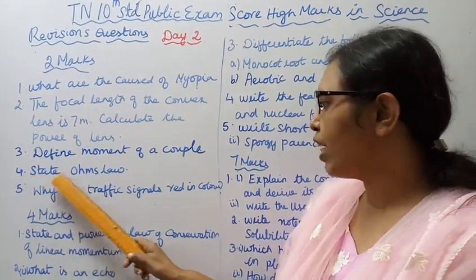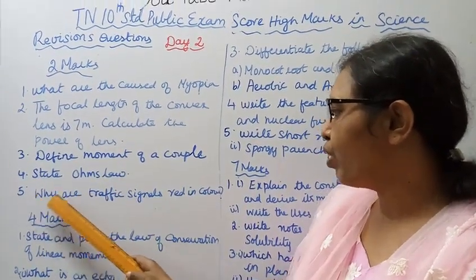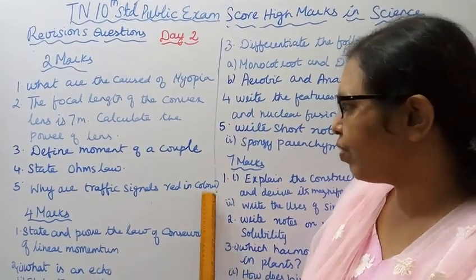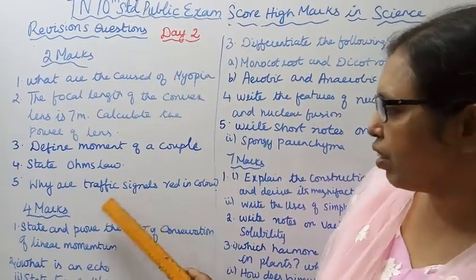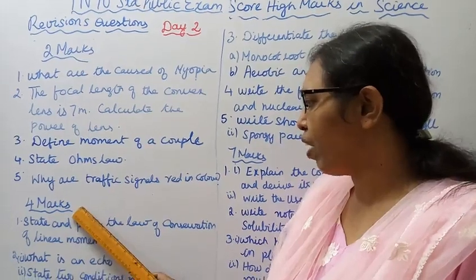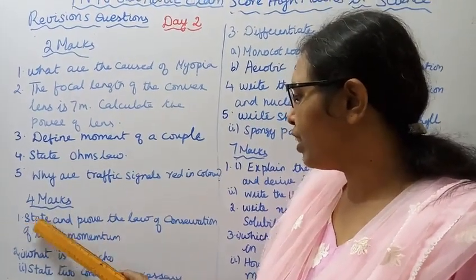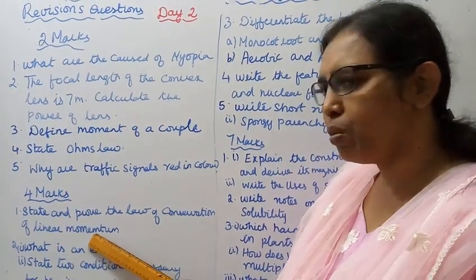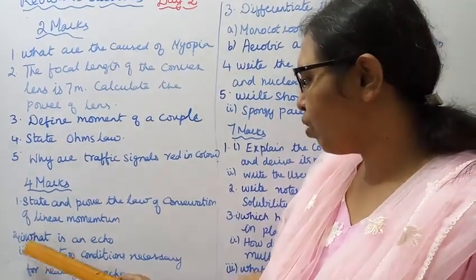Third: Define moment of a couple. Fourth: State Ohm's law. Fifth: Why are traffic signals red in color? Now, for four-mark questions, first: State and prove the law of conservation of linear momentum.